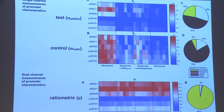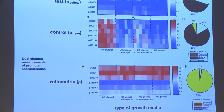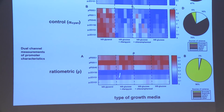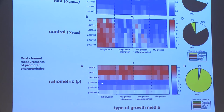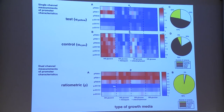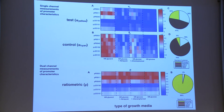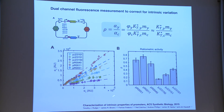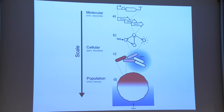By correcting for extrinsic factors with this ratiometric approach, you can remove a lot of the variation associated with different media and other external processes. This gives you an intrinsic value for the promoters that can be used for circuit design. You have an intrinsic value for the properties of the promoters that can be used for modeling. At the nanometer scale, where you've got genes and gene regulatory networks interacting, you can develop ways of measuring parameters for modeling.